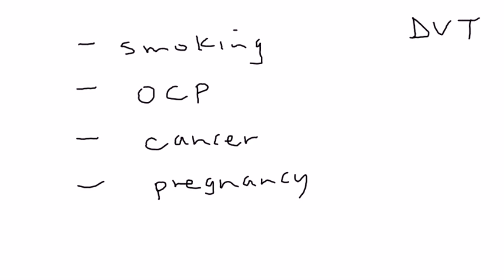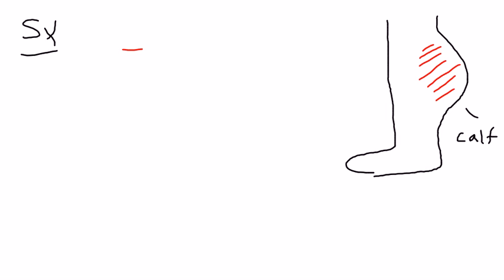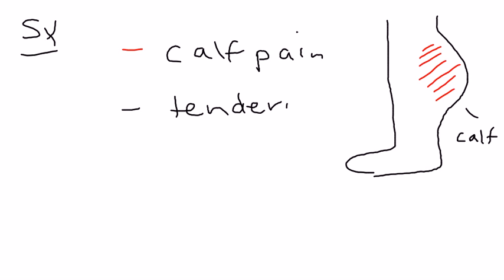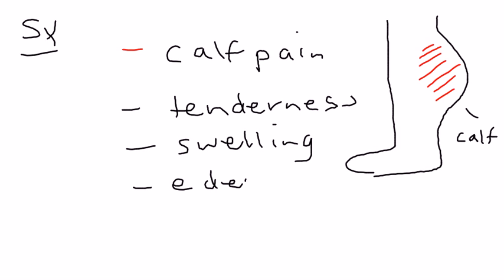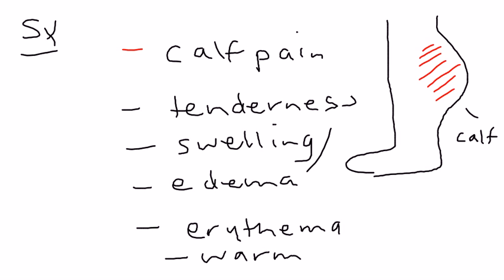Now for symptoms. If the DVT occurs in the calf — which is most common — symptoms include calf pain, tenderness on palpation, swelling (edema), redness (erythema), and warmth to the touch.